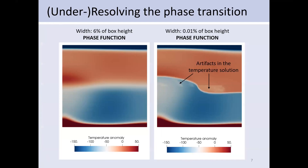I can show an example of that in ASPECT. This is a 2D convection simulation with a phase transition in the center of the box, with upwelling on one side and downwelling on the other. On the left, the phase transition is resolved at six percent of the box height, and we see the correct temperature jump across the phase transition. On the right, the phase transition is so thin it is not resolved, and we see either no temperature jump at all or completely wrong jumps — clear artifacts in the temperature solution.